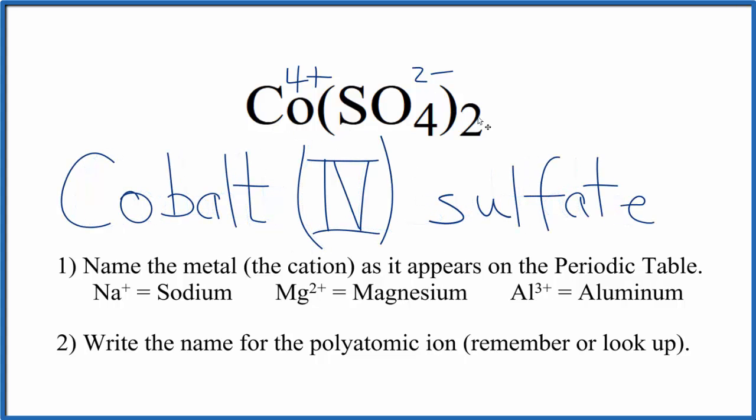And this is the name for Co(SO4)2, cobalt (IV) sulfate. This Roman numeral 4 refers to this 4 plus here, on the cobalt.